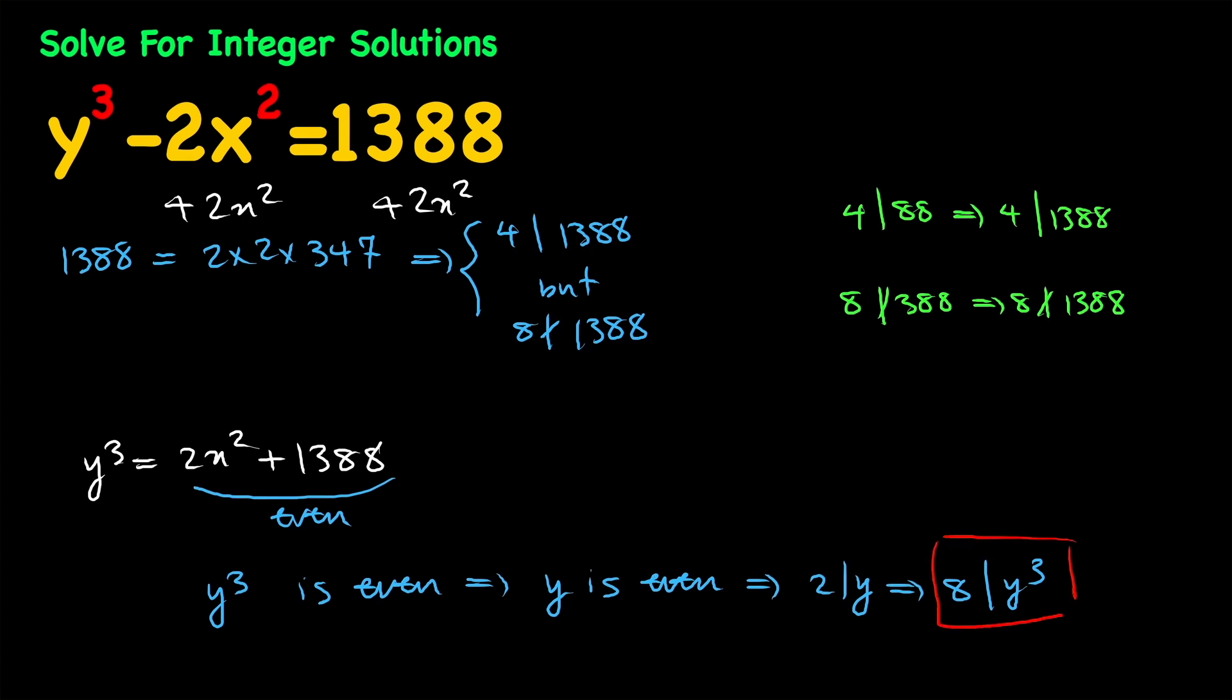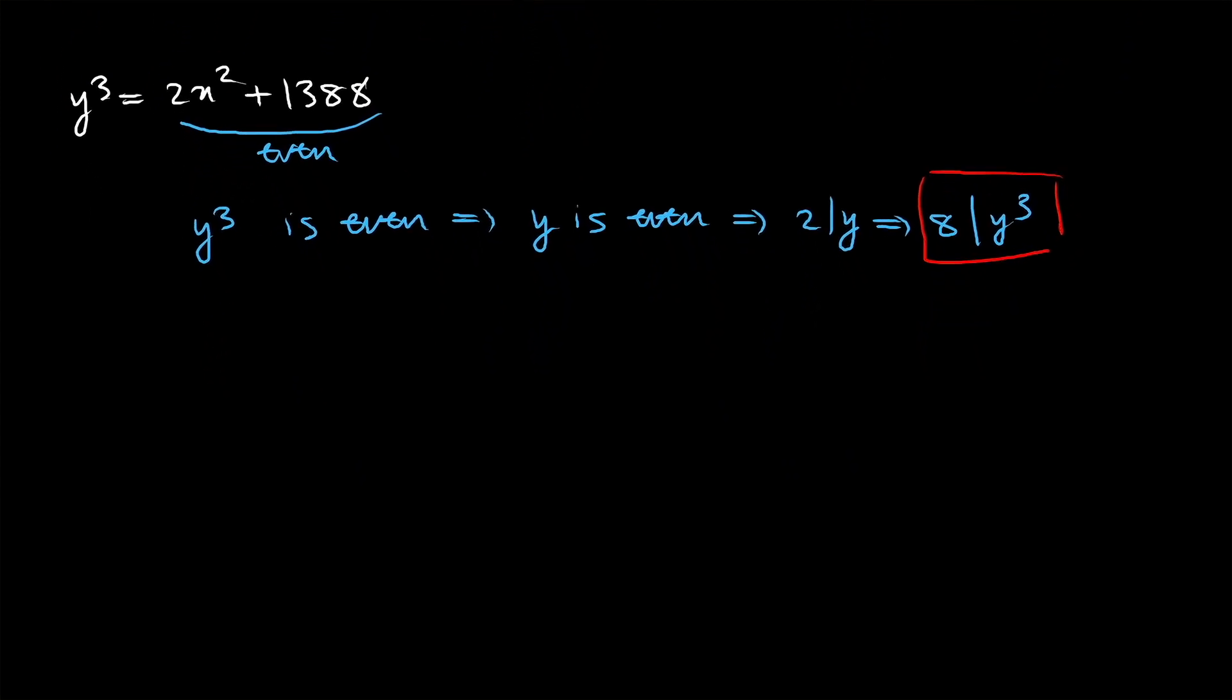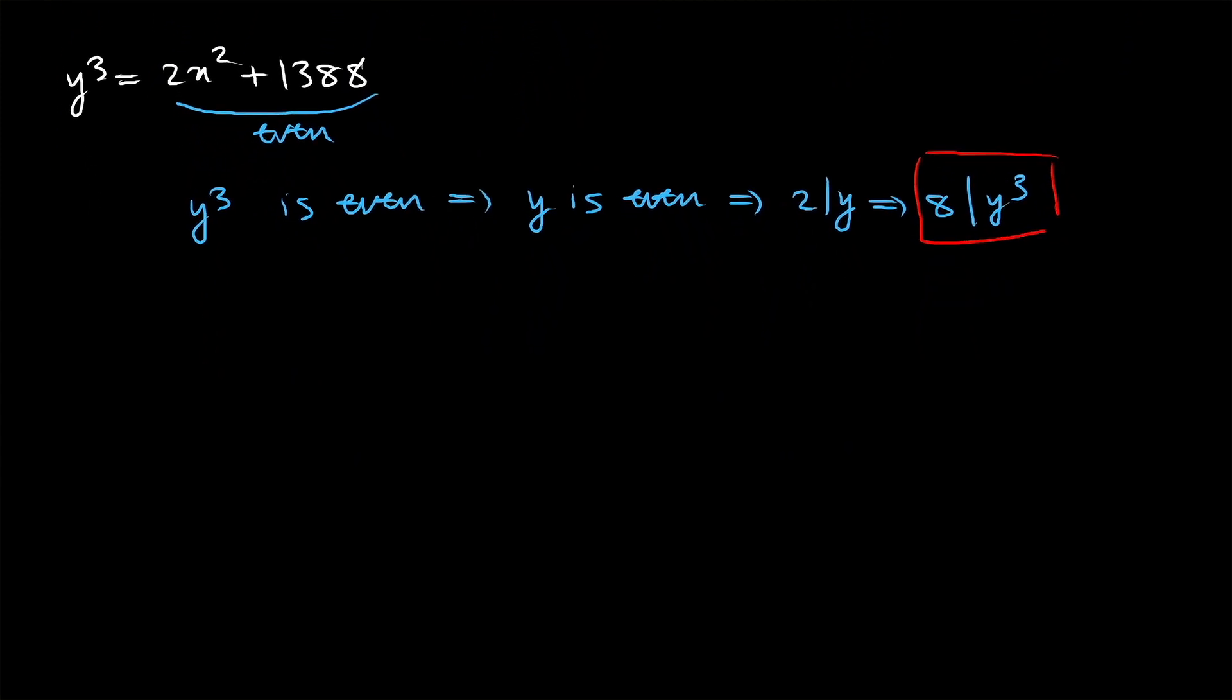Next let's go ahead and isolate 2x squared by subtracting 1388 from both sides. So y cubed minus 1388 equals 2x squared.